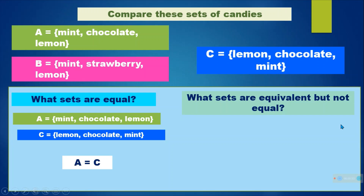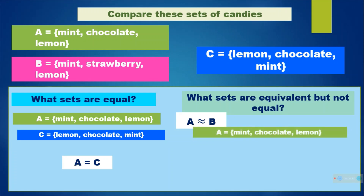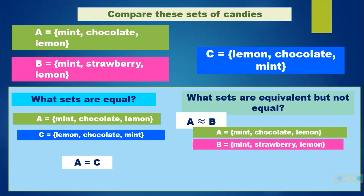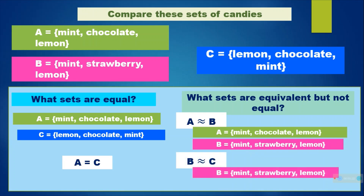What sets are equivalent but not equal? A is equivalent to B because A has mint, chocolate, and lemon, while B has mint, strawberry, and lemon. They have the same number of elements but different elements. And also set B and set C are also equivalent but not equal.